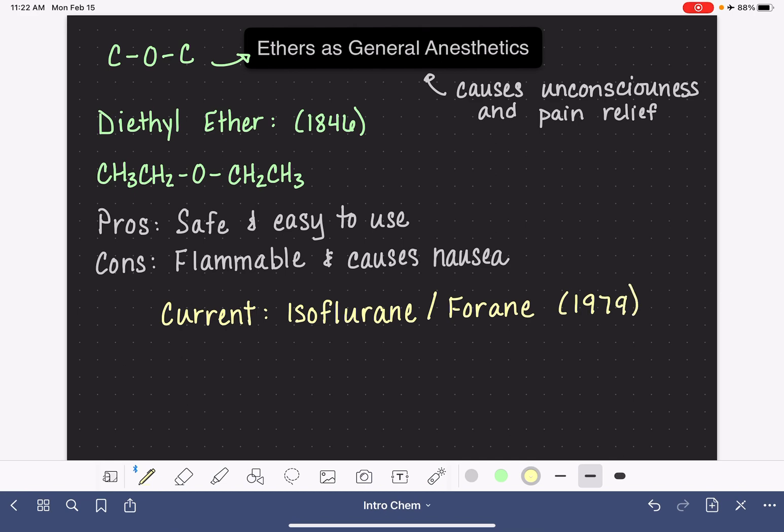It's structurally pretty similar to diethyl ether. It just has some halogens on it and one fewer carbon atom. So you can see there's chlorine, there's a few fluorines on there, and there's one less carbon atom on the left hand side as I've drawn it.